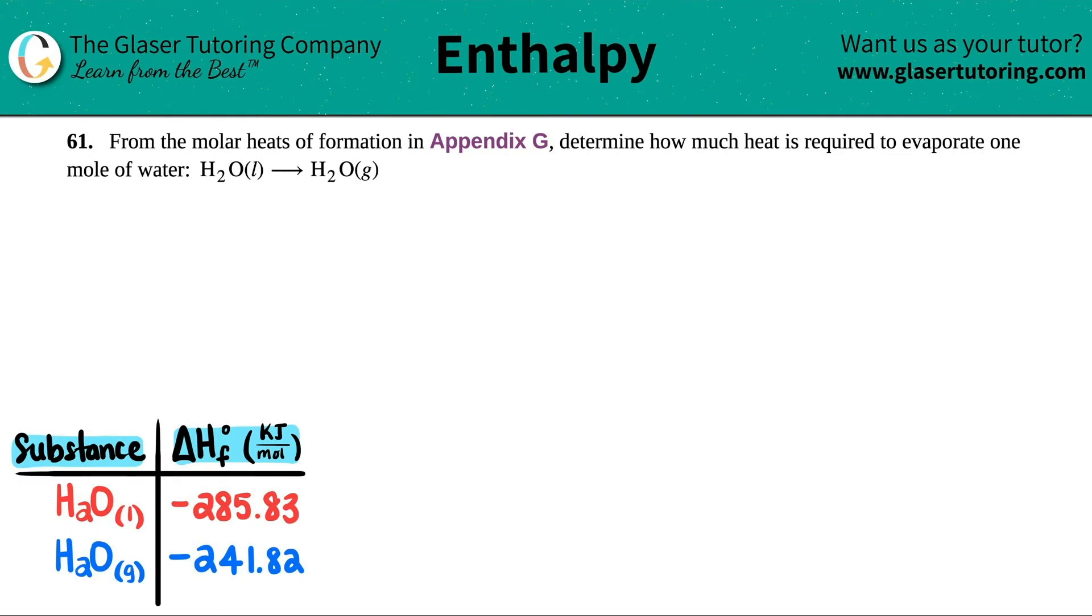Number 61: From the molar heats of formation in Appendix G, determine how much heat is required to evaporate one mole of water. And then they give us the formula that we need to use.